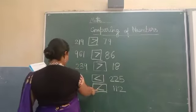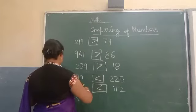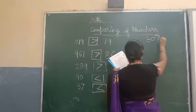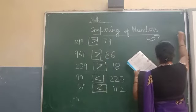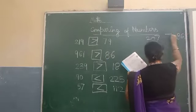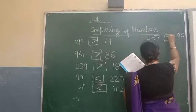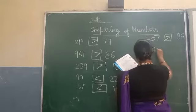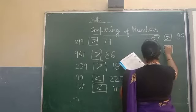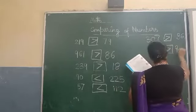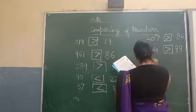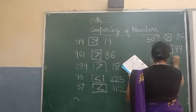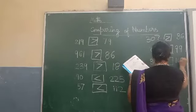Put the less than sign like this. Next, 307 is greater than 86. 104 is greater than 99. 85 is less than 110.